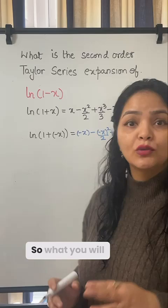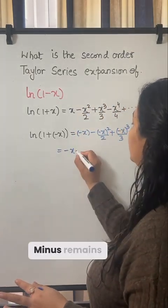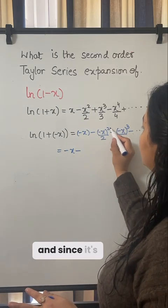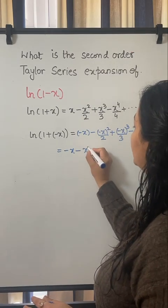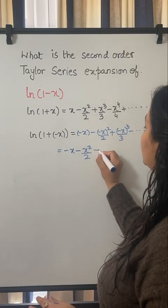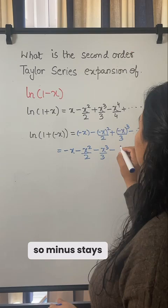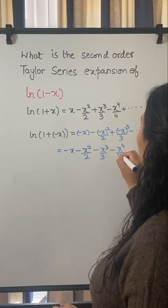So what you will observe here is that you are getting minus x minus remains as it is. And since it's an even power, it turns into x squared upon 2. Since it's an odd power, it's minus x cubed upon 3. Again, then even power, so minus stays as it is to the power 4 upon 4, so on and so forth.